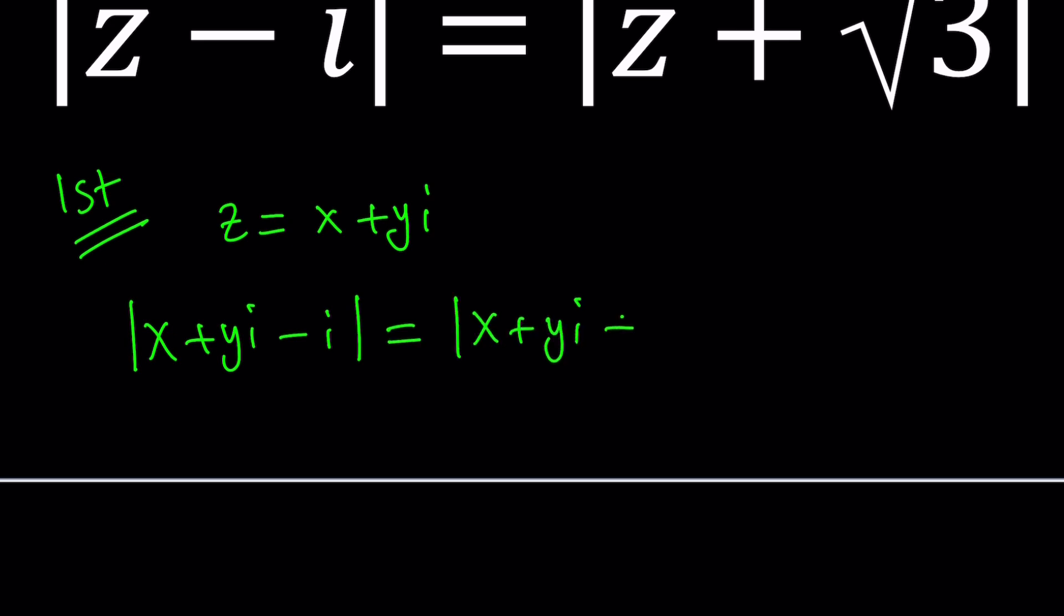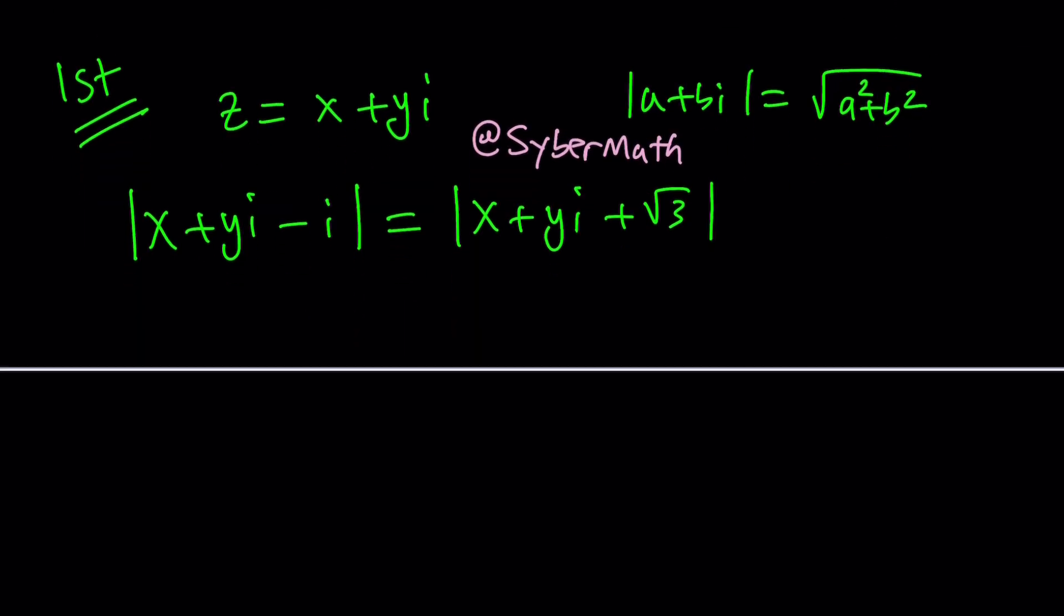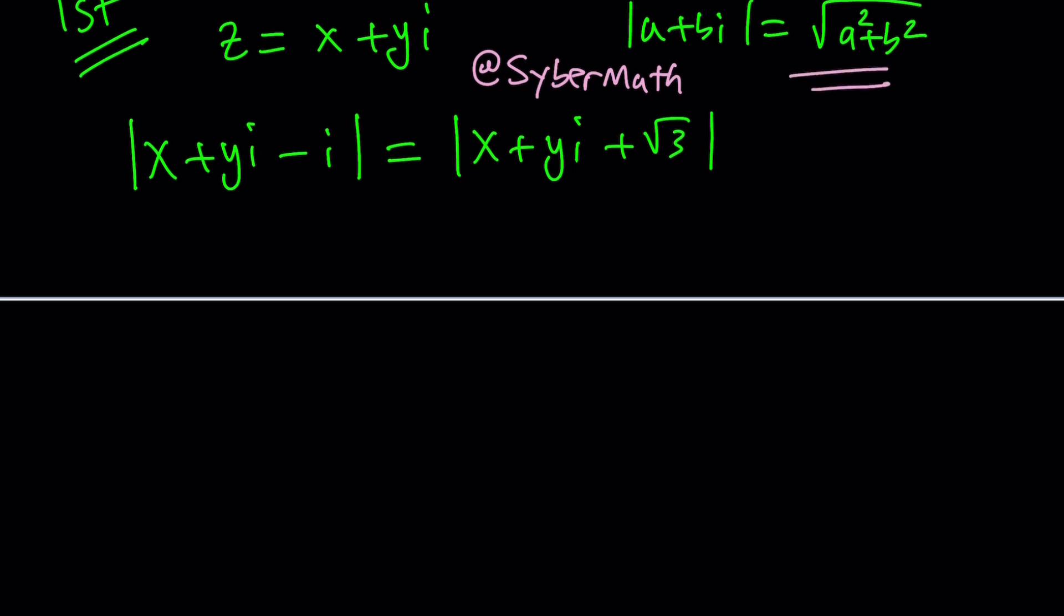If you replace z with x plus yi in two places, you get x plus yi minus i equals x plus yi plus root 3. Let's remember the definition of absolute value. How do you find the absolute value of a plus bi? It is the square root of a squared plus b squared. In other words, it's the distance from zero when you plot it on the complex plane or argand plane. If you're new to complex numbers, check out my lecture videos. I made a bunch of videos about the basics of complex numbers.